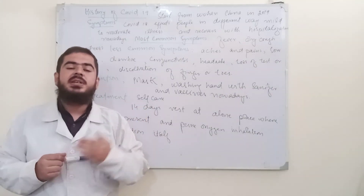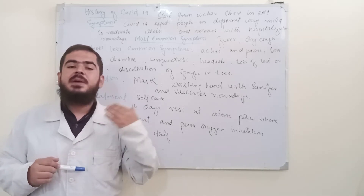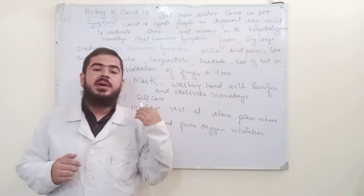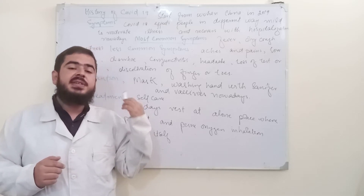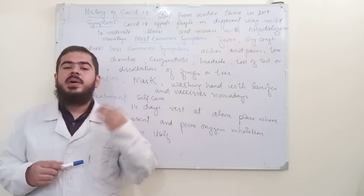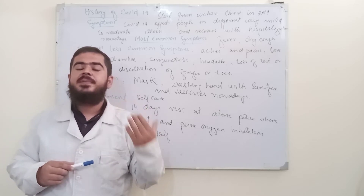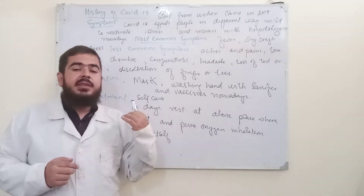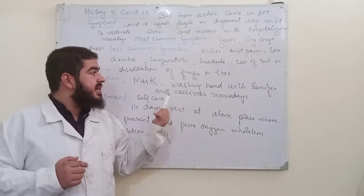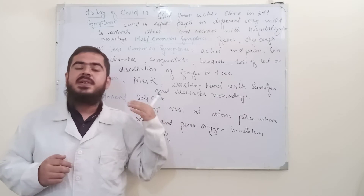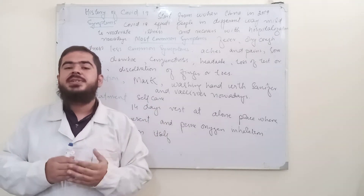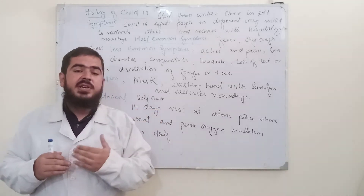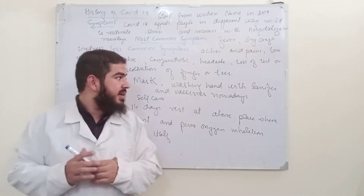To prevent ourselves and others from COVID-19, the most common prevention instrument is a mask. If we use a mask, it can decrease the chances of COVID-19 by about 80 percent. Second, if we sanitize our hands — for example, washing hands with sanitizer before and after going to the office — it provides good protection from COVID-19.